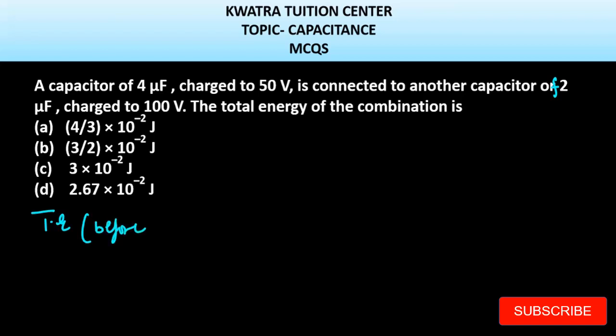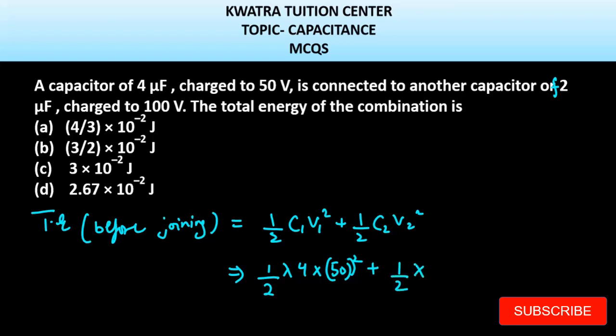It will be half C1 V1 square plus half C2 V2 square. If you look at all the values, we have to see C1 V1, C2 V2. Half C1, it is 4. V1 what is it? It is 50 square. Then we have half as it is. C2 value is 2 and V2 square is 100 square.